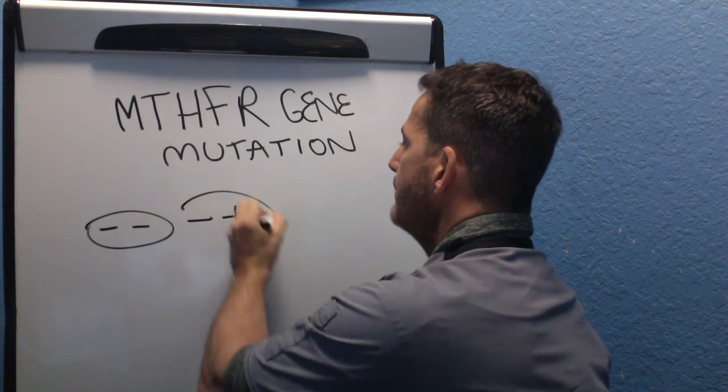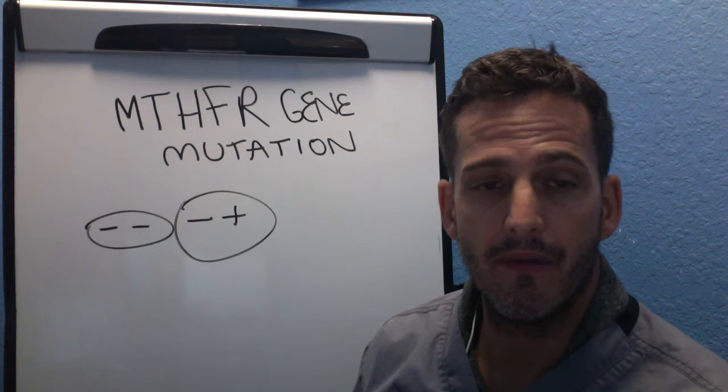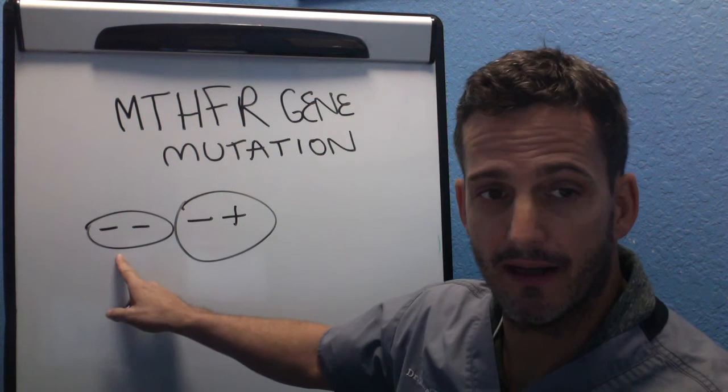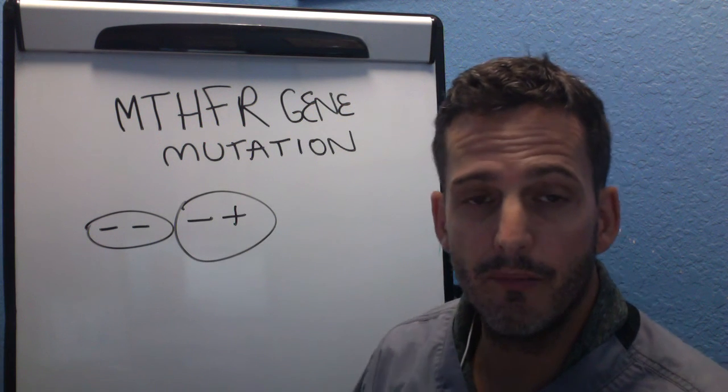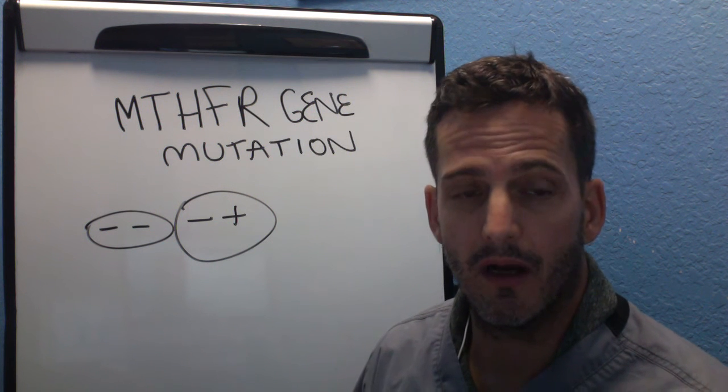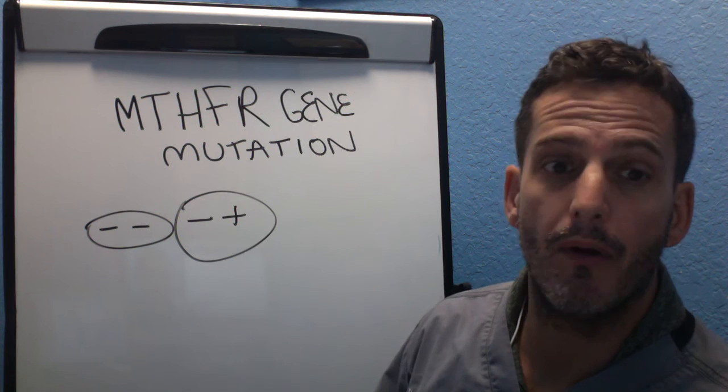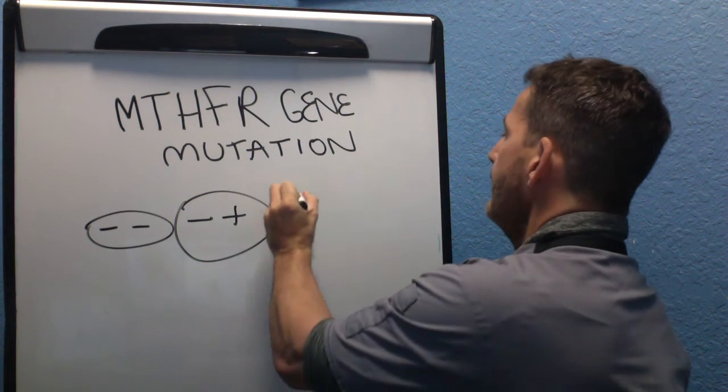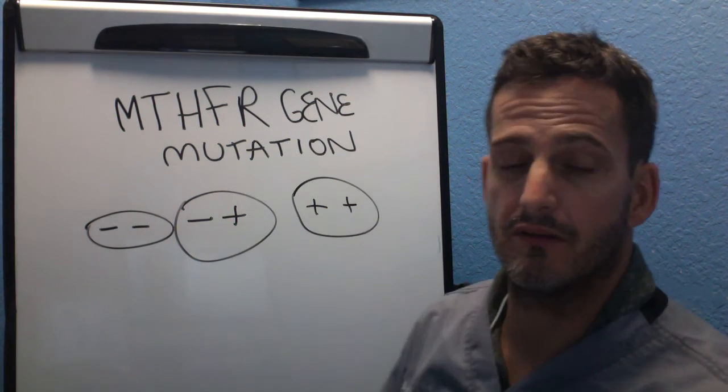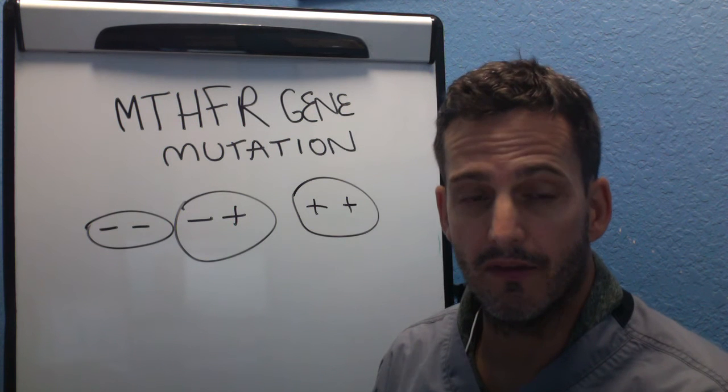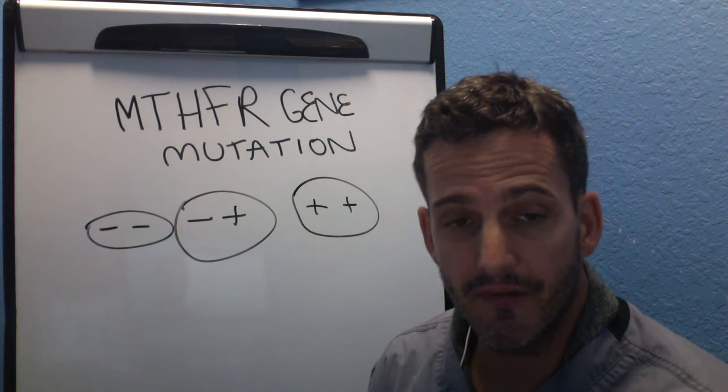But there are three possible results that can come out. The first one is negative-negative. That means that there is no mutation, that the gene is working optimally. The next one is negative-positive. That means that there's some alteration in the gene. The last one is positive-positive, which means there's a more alteration in the gene, that it's not working efficiently.